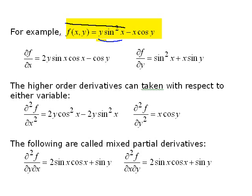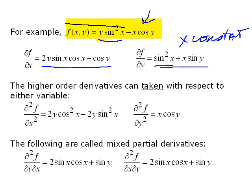The next term gives you cosine y using the product rule for x. Cosine y is considered a constant when you take this derivative. Now taking the derivative with respect to y of the same function, x is held constant. The first term gives you sine squared x, and the second gives you plus x sine y, because cosine y becomes negative sine y and x is a constant. Both results are functions of x and y.